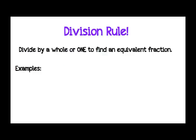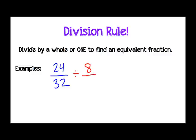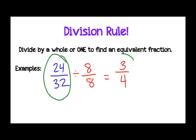The second way we can find equivalent fractions is by using the division rule. So let's say we had a larger fraction, something like 24/32. We're going to think of a number that we could divide both the numerator and the denominator by to get an equivalent fraction. I know that 8 goes into 24 and that 8 goes into 32, so I'm going to divide by 8 over 8. Again, 8 over 8 is a whole — it's equal to 1. So we divide the numerator: 24 divided by 8 is 3. And we divide the denominator: 32 divided by 8 is 4. So now we've found an equivalent fraction: 24/32 is equivalent to 3/4.